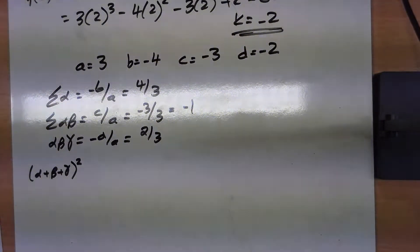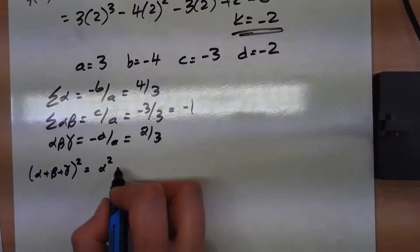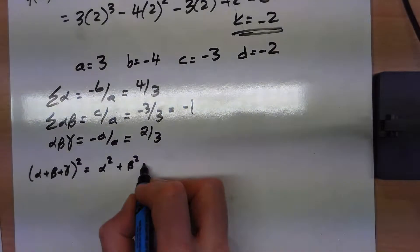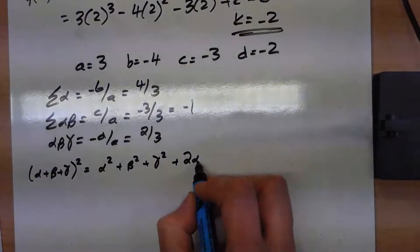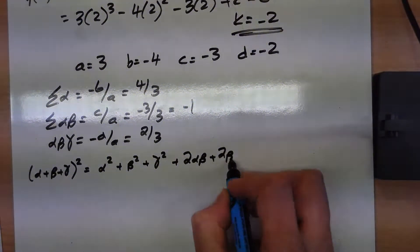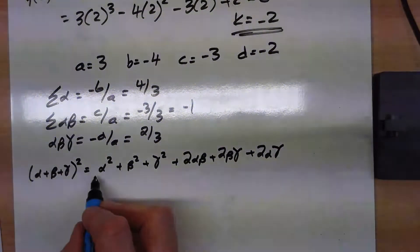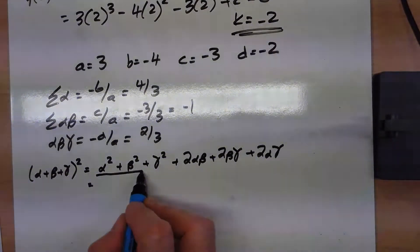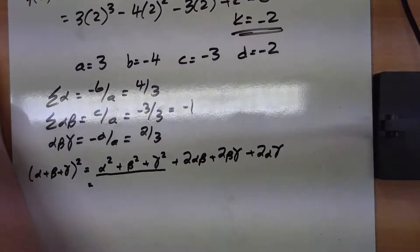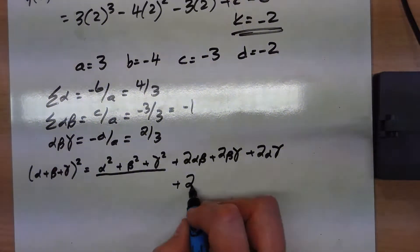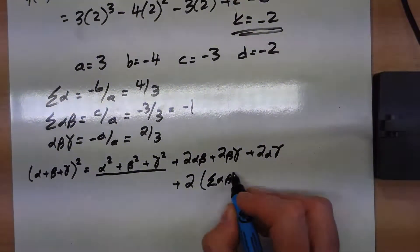We want to find out what alpha plus beta plus gamma all squared is. Well, that is alpha squared and beta squared and gamma squared, but then you'll have 2 lots of alpha beta and 2 lots of beta gamma and 2 lots of alpha gamma. So it's alpha squared and beta squared and gamma squared plus 2 lots of, and this of course is the sum of the pairs of the roots there.